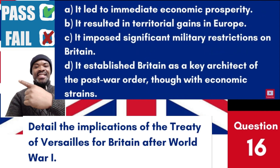Question 16: Detail the implications of the Treaty of Versailles for Britain after World War I. a. It led to immediate economic prosperity. b. It resulted in territorial gains in Europe. c. It imposed significant military restrictions on Britain. d. It established Britain as a key architect of the post-war order, though with economic strains. Answer: d. The Treaty of Versailles had Britain playing a central role in its drafting, shaping the post-war international order, but also dealing with economic challenges resulting from the war.